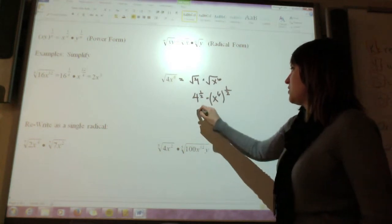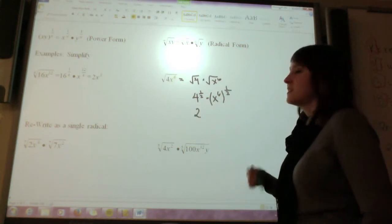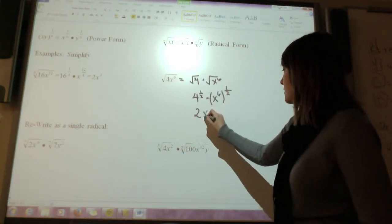Now 4 to the 1 half, that's just 2. And x to the sixth to the 1 half, that's x to the 6 halves, which simplifies down to 3, so it would just be x to the third.